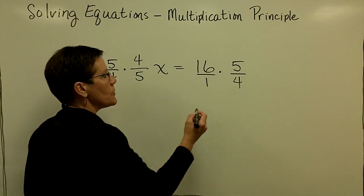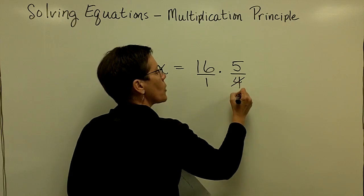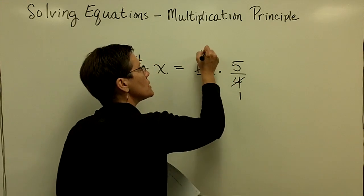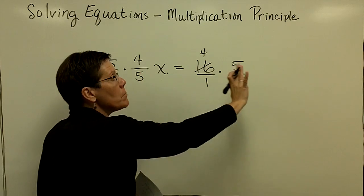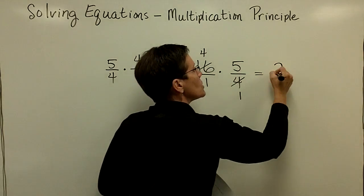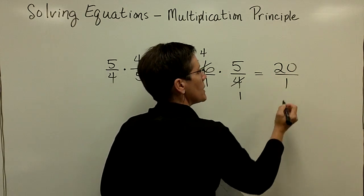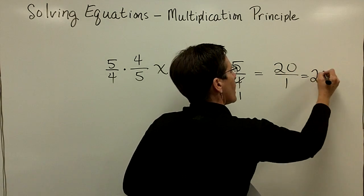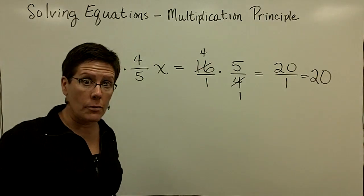Please remember to reduce if you can. And so I'm going to say that 4 goes into here once, and 4 goes into here 4 times, and then multiply straight across. So my answer is 4 times 5, which is 20, over 1 times 1 in the denominator, which is 1. And so I'll just write that answer as the value of 20.